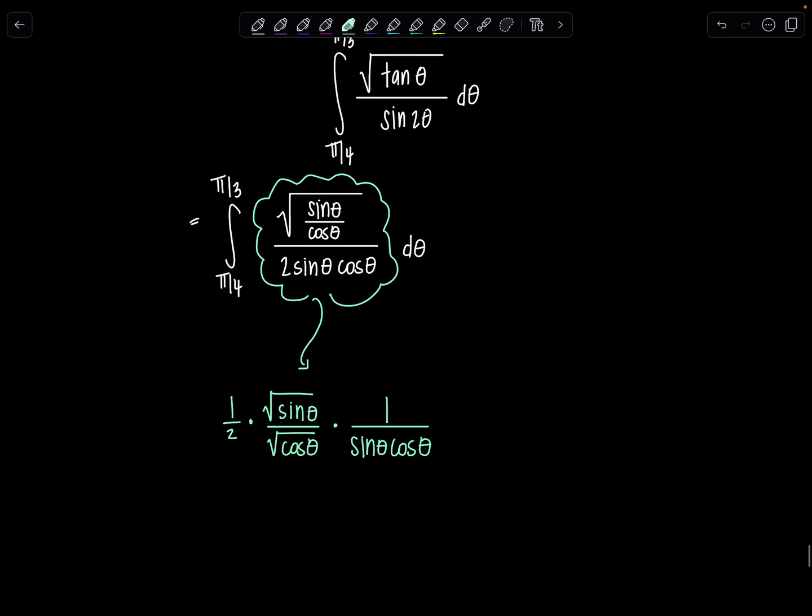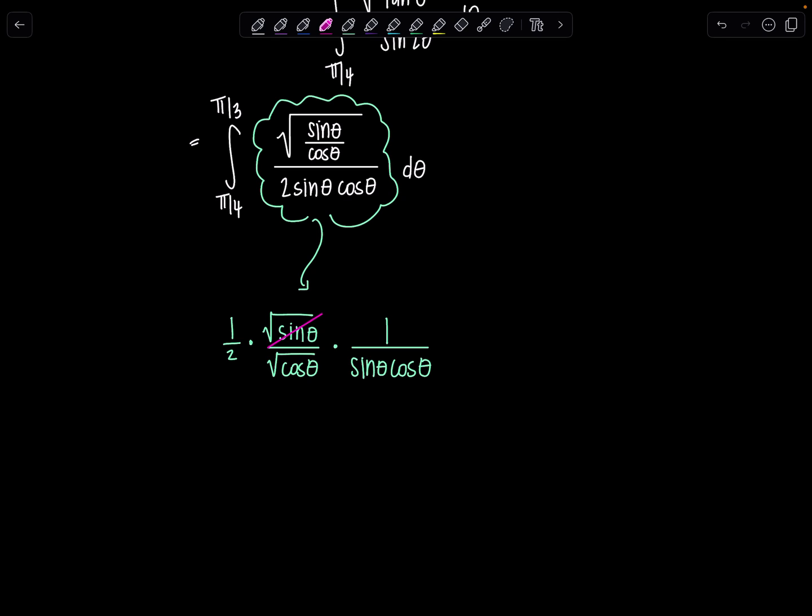Let's simplify. I can cancel out this rad sine theta with sine theta here. Be careful, this is to the one half power because it's a square root. This is to the first power. So I'm going to be left with sine theta to the one half power in the denominator. And then I have square root of cosine theta and cosine theta, both in the denominator. So I'm going to add the exponents, one half and first. So then I have one over cosine theta to the three halves power, and then this cute little one half is just hanging out minding its own business.